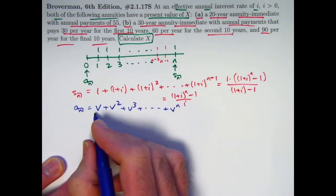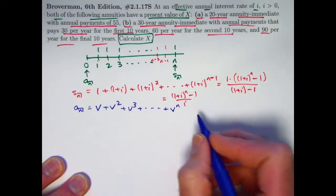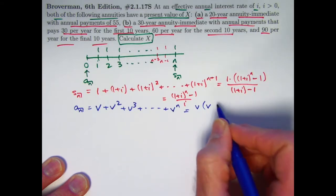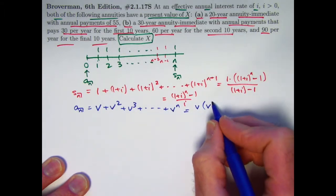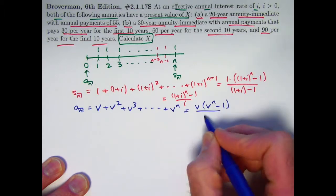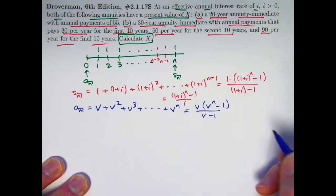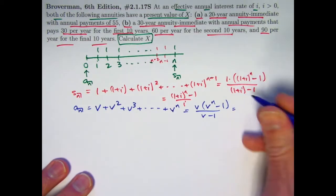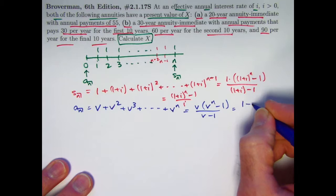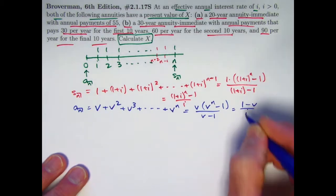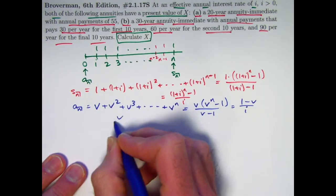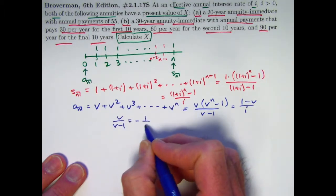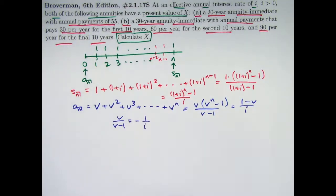This is also a geometric series with first term v and common ratio v. It will equal the first term times the common ratio to the power equal to the number of terms. There are N terms here. Minus one over the common ratio minus one. That is what the sum is, and it turns out that this can be simplified to (1 - v^N) / i. And the reason is because v / (v - 1), it turns out, is equal to -1 / i.